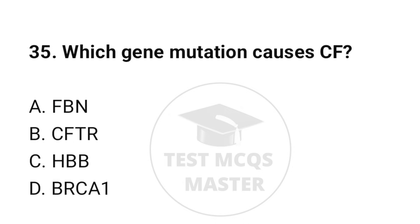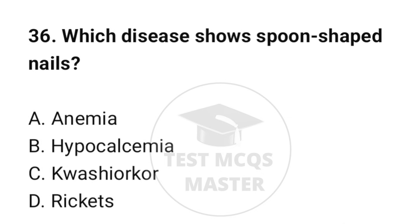Question number 35: Which gene mutation causes CF? The correct option is B: CFTR. Question number 36: Which disease shows spoon-shaped nails? The correct option is A: Anemia (iron deficiency).